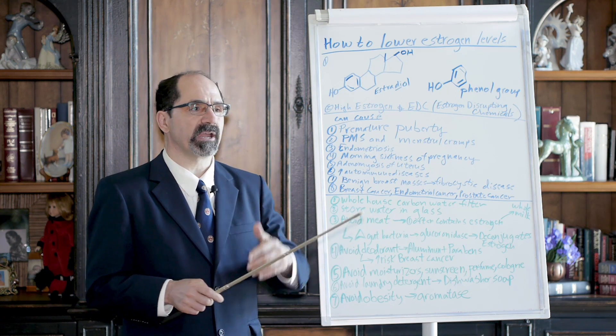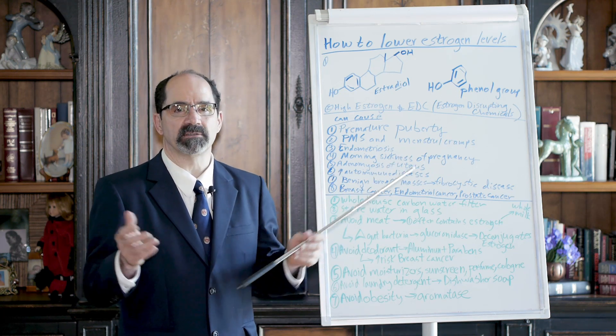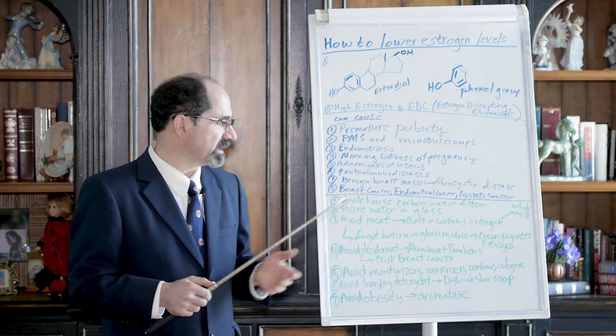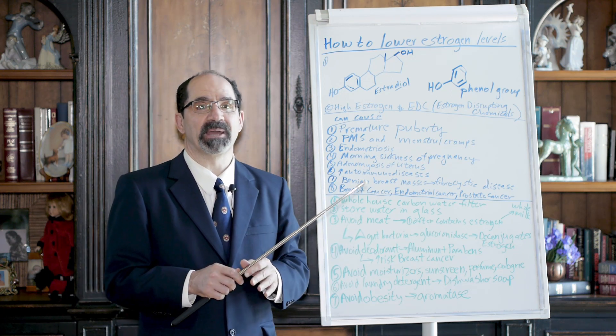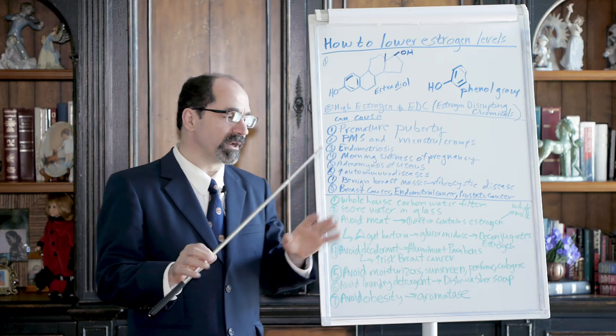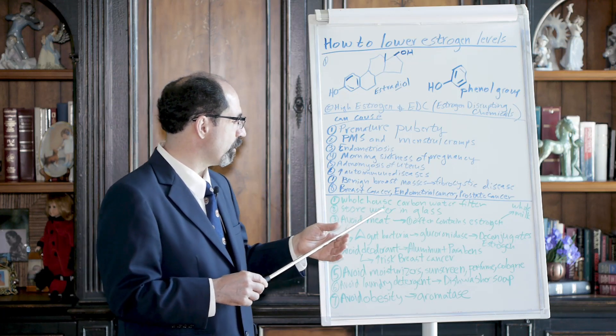In addition, they spray atrazine on lawns and on crops - that's another estrogenic herbicide. And there's a whole bunch of other ones, a whole bunch of other estrogenic chemicals in that water. You want a carbon filter at the minimum. I recommend it for your whole house.